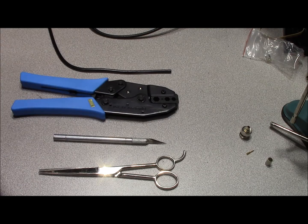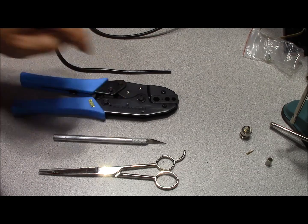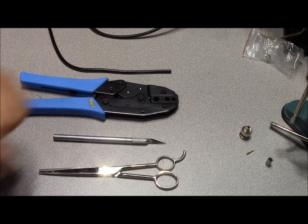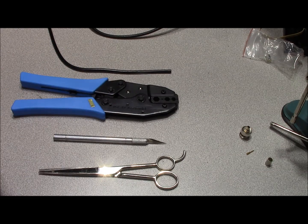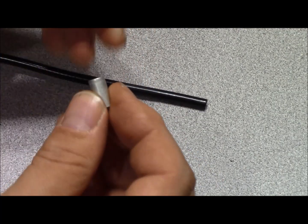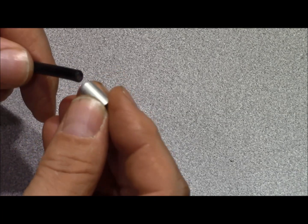The only tools we're going to utilize to terminate this cable are going to be a set of crimping pliers, an exacto knife, and scissors. Before we get started, take your ferrule and place your ferrule on your cable.